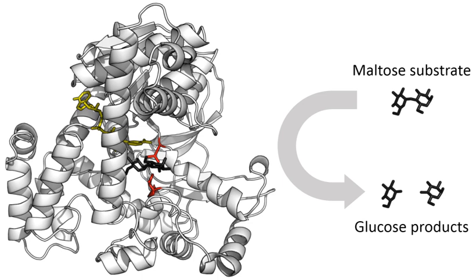Several enzymes can work together in a specific catalytic order, creating metabolic pathways. In a metabolic pathway, one enzyme takes the product of another enzyme as a substrate. After the catalytic reaction, the product is then passed on to another enzyme. Sometimes more than one enzyme can catalyze the same reaction in parallel, allowing more complex regulation — with, for example, a low constant activity provided by one enzyme but an inducible high activity from a second enzyme. Without enzymes, metabolism would neither progress through the same steps nor could it be regulated to serve the needs of the cell. Most central metabolic pathways are regulated at a few key steps, typically through enzymes whose activity involves the hydrolysis of ATP. Because this reaction releases so much energy, other reactions that are thermodynamically unfavorable can be coupled to ATP hydrolysis, driving the overall series of linked metabolic reactions.